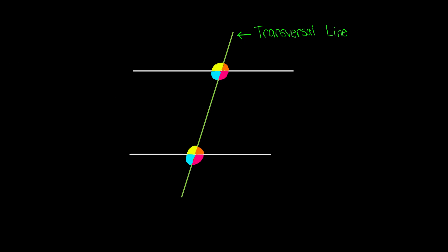Let's go ahead and name the angles first. We have angle number one, angle number two, angle three, angle four, five, six, seven, and eight. So here are the eight angles.